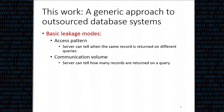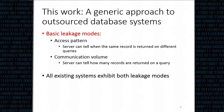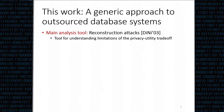We identified two basic leakage channels that all current systems have. The first is the access pattern leakage, which allows us to see—when we query an encrypted database—the number of records retrieved and whether the same record is retrieved for a different query. The communication volume leakage, on the other hand, only reveals the number of records returned after each query.